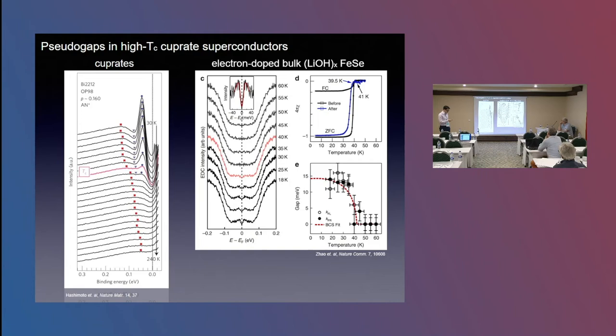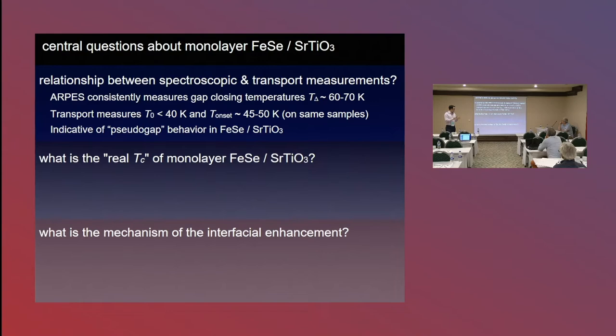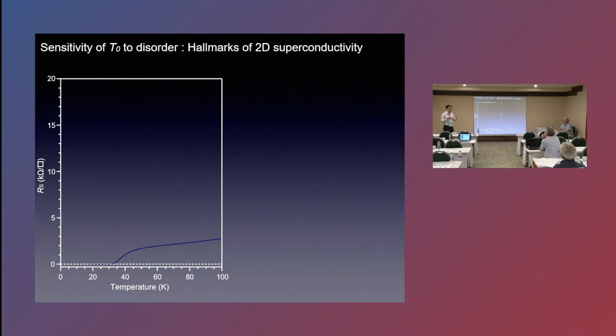So that establishes there's really a very clear and intrinsic difference between the spectroscopic gap closing temperature and the resistive transitions we see. I want to also answer this question. I alluded to that there was a lot of sample to sample variation. And we believe that's a hallmark of 2D superconductivity in the system.